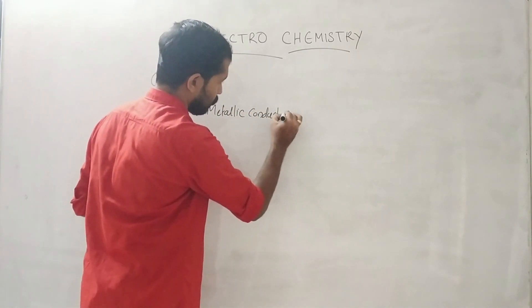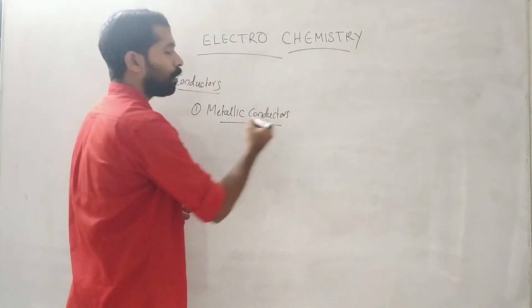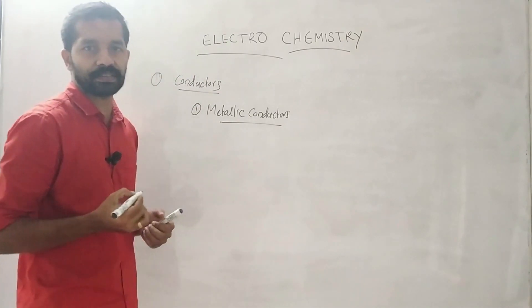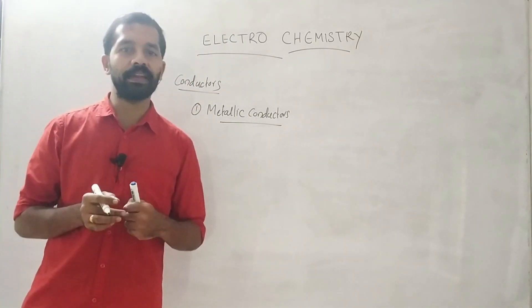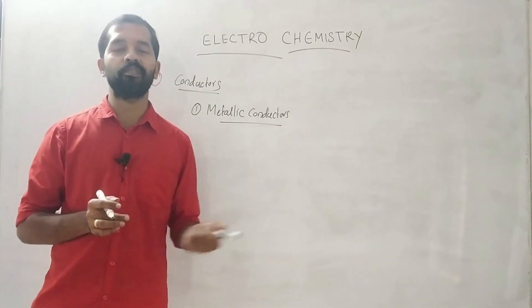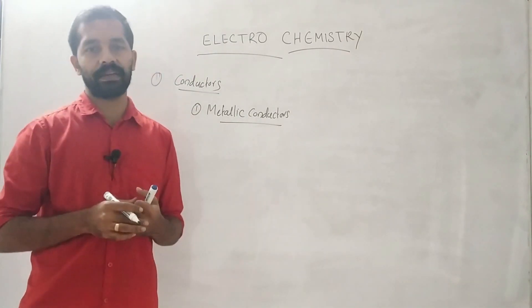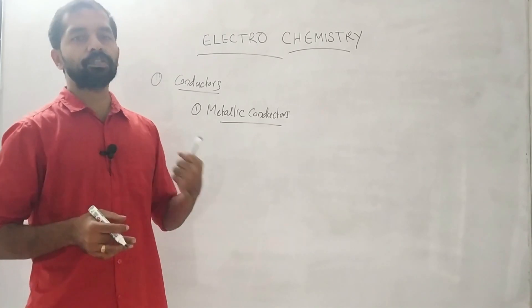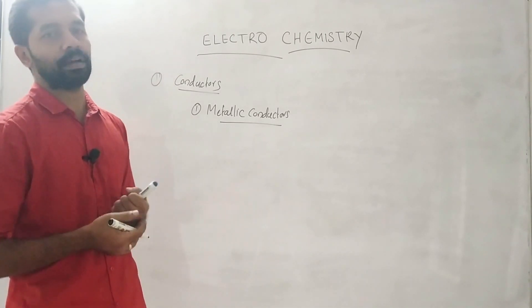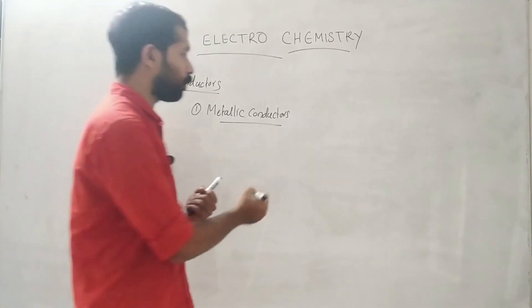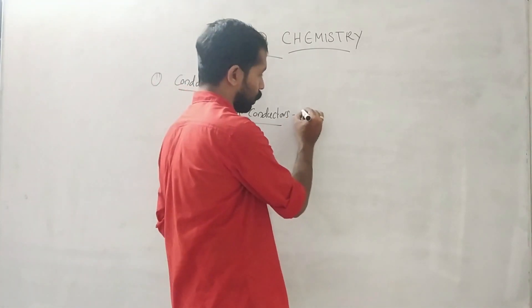Metallic conductors — for example, copper wire is a metallic conductor, aluminium wire is a metallic conductor. In metallic conductors, electricity passes due to the movement of electrons.